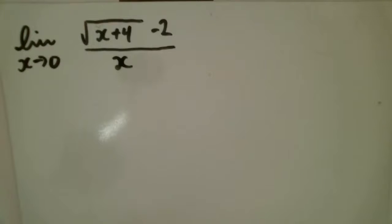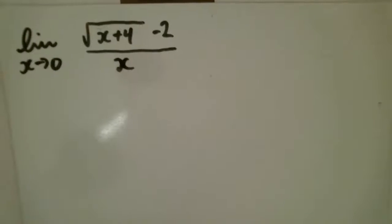The square root of x plus 4 minus 2 over x. We are trying to find the limit as x goes to 0. When you substitute 0 in for x, you get the square root of 4 minus 2, which is 0 over 0, and we cannot have that. 0 over 0, that's bad.